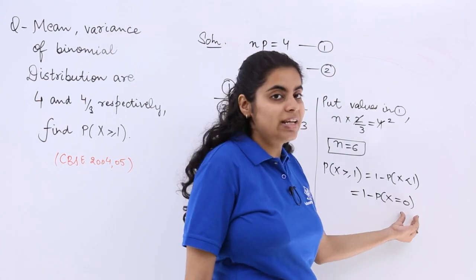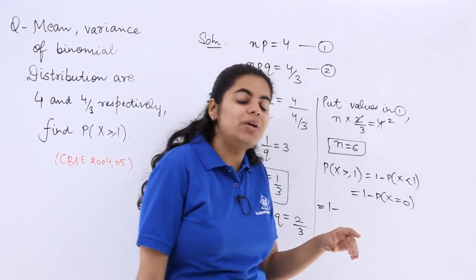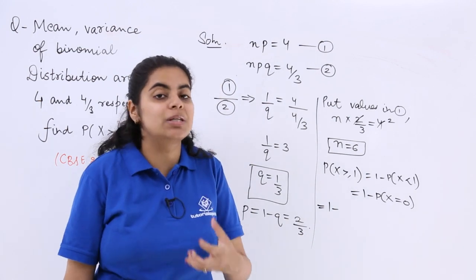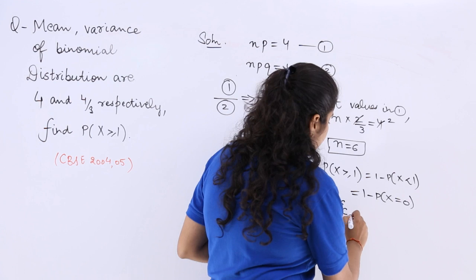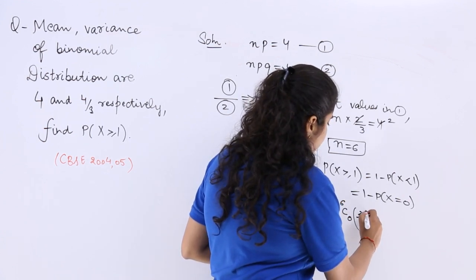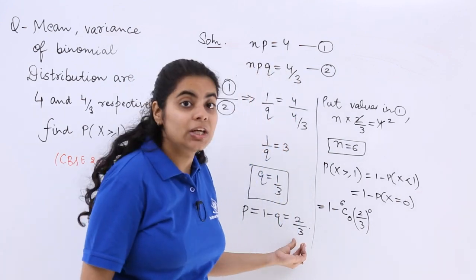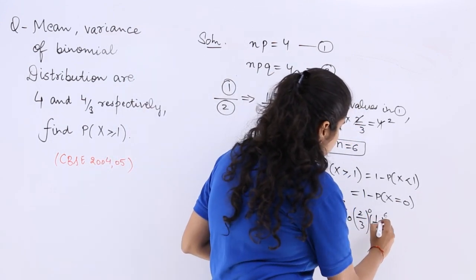Now what is the probability when X is equal to 0? We know 1 minus nCr times P raised to the power r, Q raised to the power n minus r is the formula. So nCr, P raised to the power r, this is P, Q raised to the power n minus r.